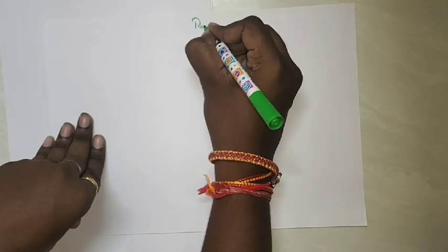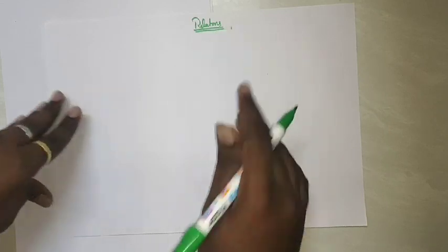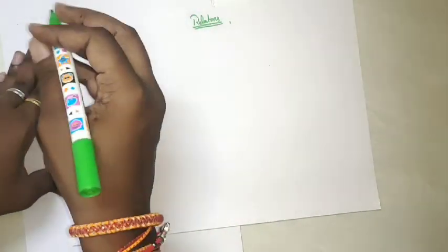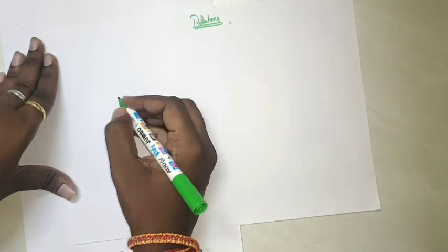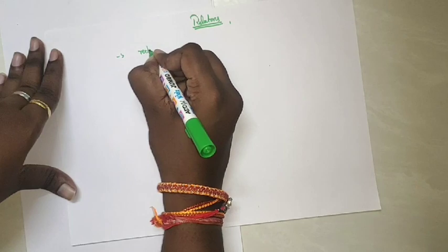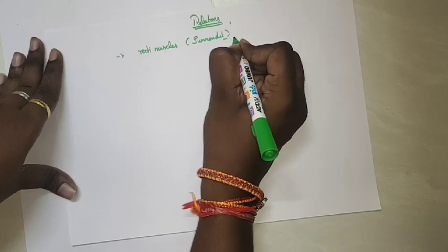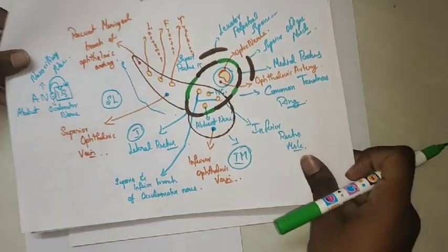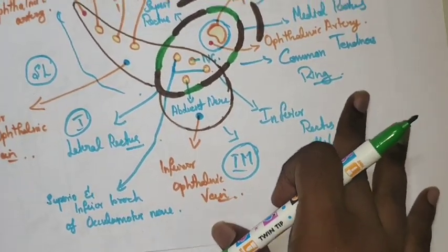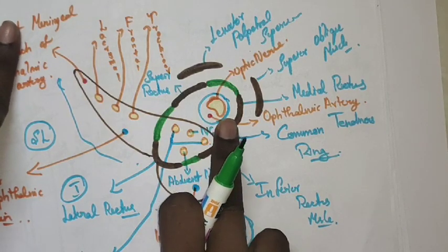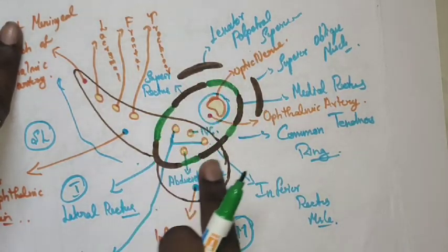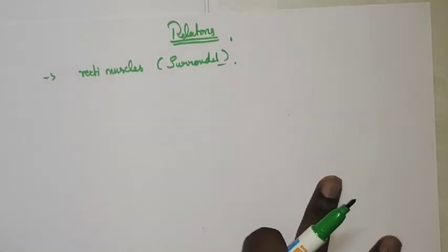Now we'll look at the anatomical relations of the optic nerve. The optic nerve enters from the optic canal and, as we saw, it is surrounded by the recti muscles. In this picture, the optic nerve is surrounded by recti muscles — that is the first relation of the optic nerve.